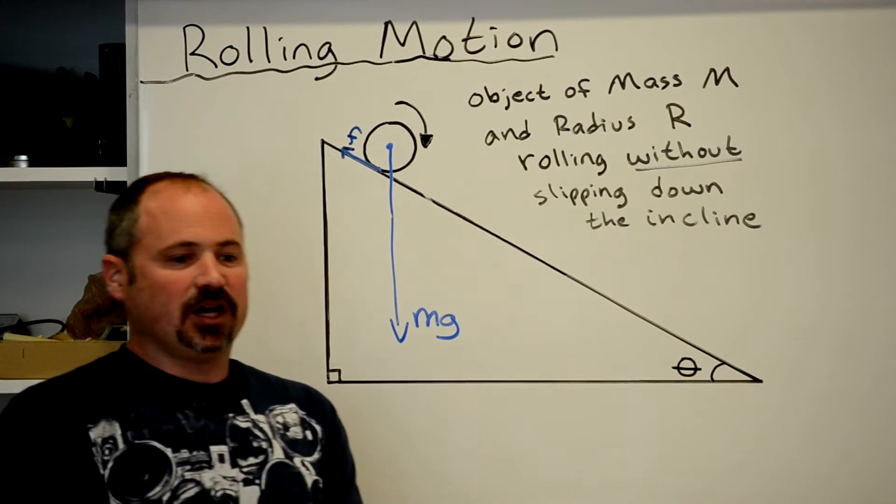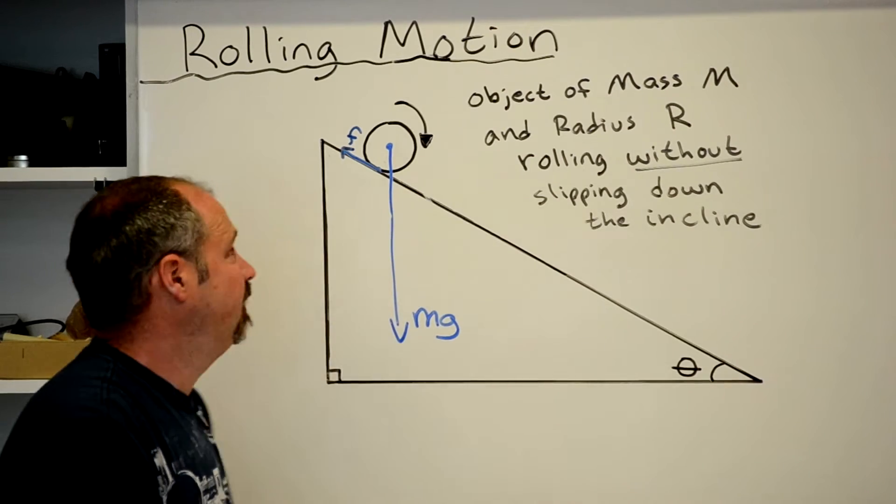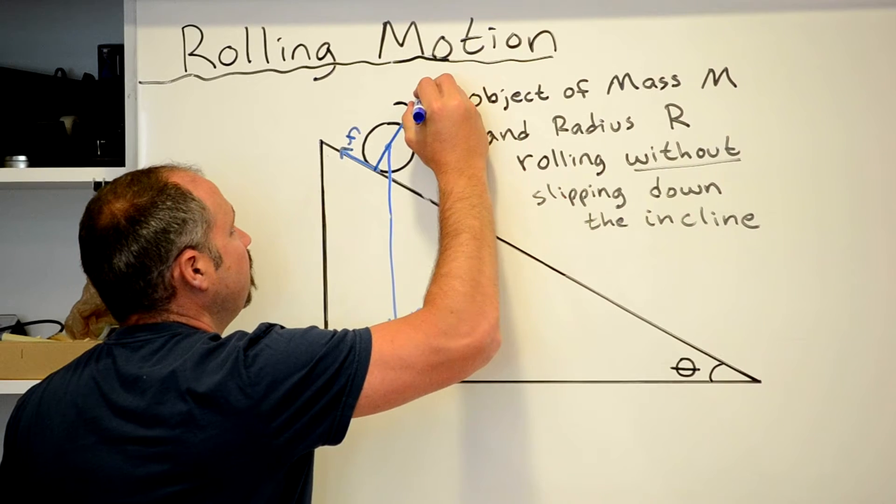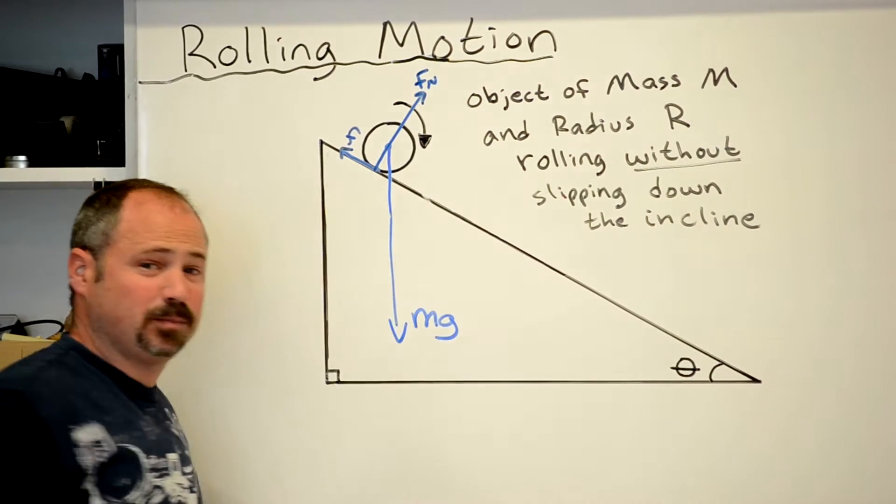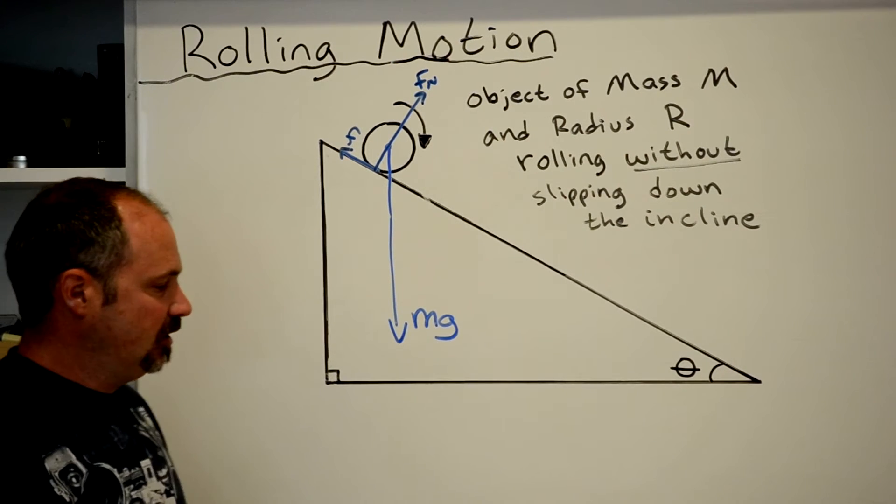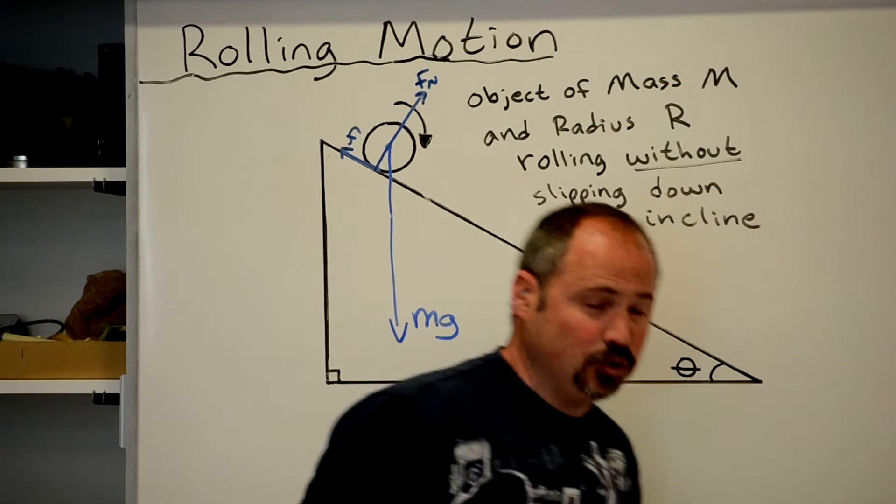And finally, there's contact between the rolling object and the inclined plane. Therefore, there's a normal force. And the normal force always points perpendicular to the surface. So those are the three forces acting on either the hoop or the disc.